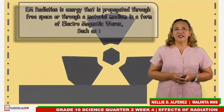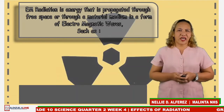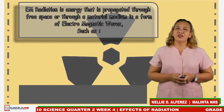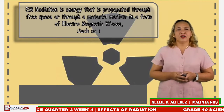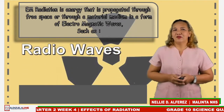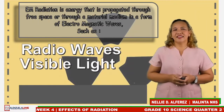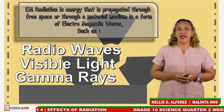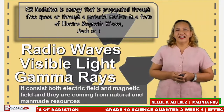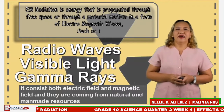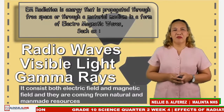Let us define EM radiation. EM radiation is an energy that is propagated through free space or through a material medium in the form of electromagnetic waves such as radio waves, visible light, and gamma rays. It consists of both electromagnetic and electric fields, and they come from natural and man-made resources.